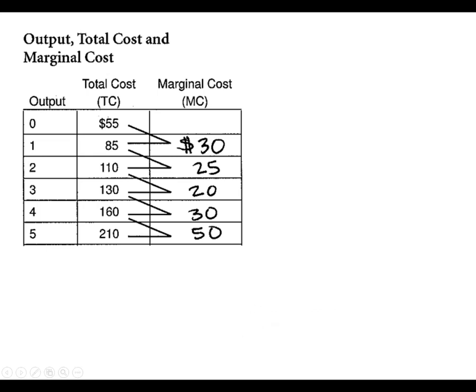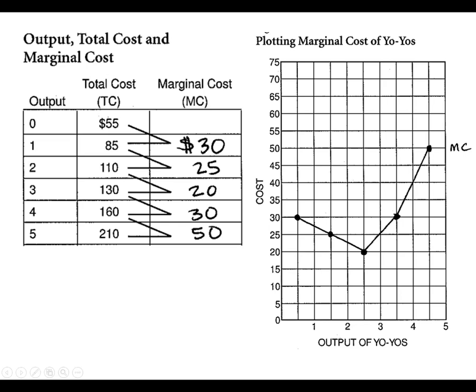We want to graph this to see what it looks like. The first unit is 30 — they're graphing in between the zero and first. The second unit is 25. The third unit is 20. The fourth unit is 30. And the fifth unit is 50. We graph it this way because we can see where diminishing marginal returns begin, and it begins at the third unit. So what's going on after the third unit? Why are the costs rising? How can we flatten that out? That's the challenge of management.